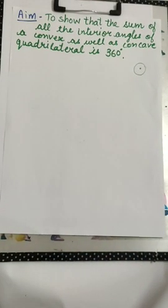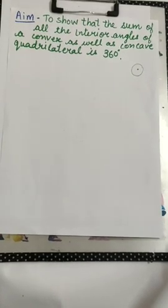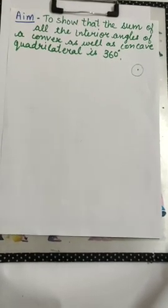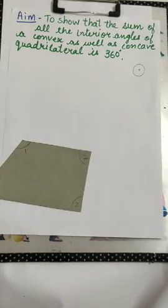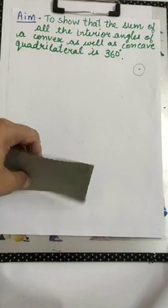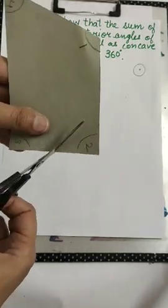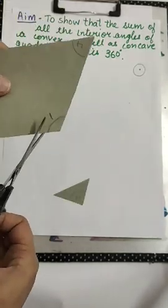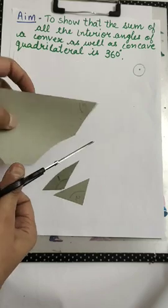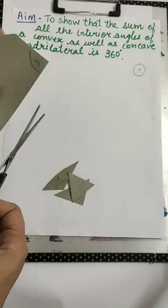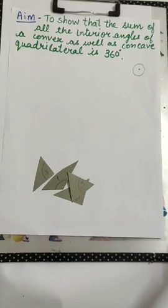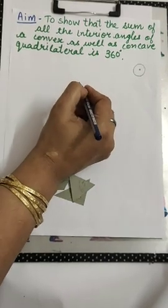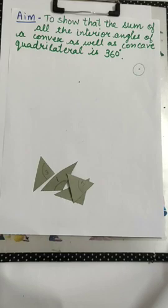So let us prove this. First of all, we are going to prove for this. What is this? This is convex quadrilateral. To prove this, I am going to cut all the interior angles like this. I am going to paste all these four angles on a single point. Let me put a point here and I am going to paste all the angles here.